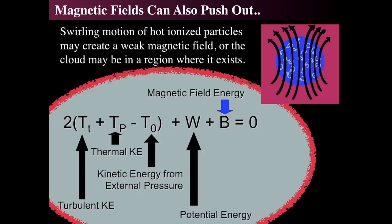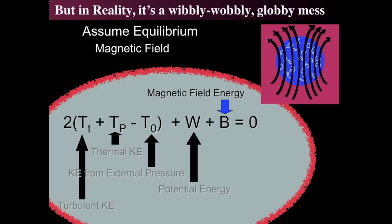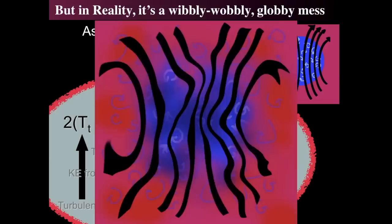So you have kinetic energy from turbulence, kinetic energy from heat, and kinetic energy from external pressure — all being pulled together by gravity, with the magnetic field also trying to pull it together. If it's in some equilibrium, you've got a wibbly, wobbly, ugly mess. That's what all of them tend to look like: a dense core being pushed from the outside, with all sorts of turbulence — like the Eagle Nebula. A giant molecular cloud is held up by its internal pressure from heat and from magnetic fields.